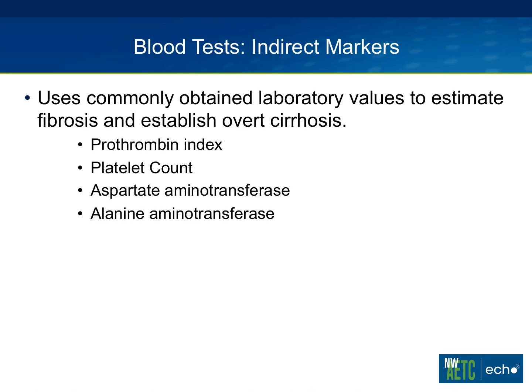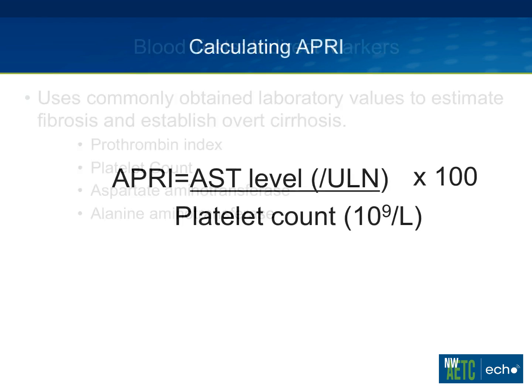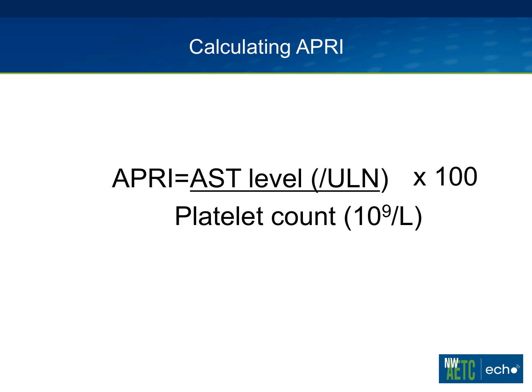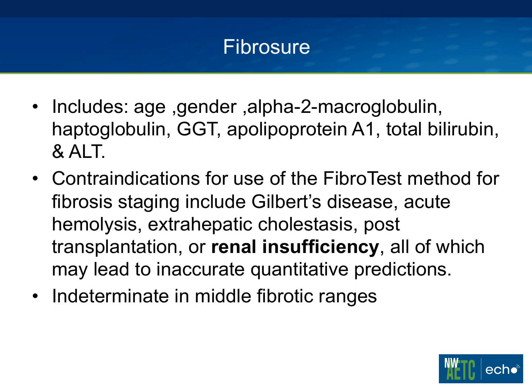Blood tests used for fibrosis assessment are grouped into direct and indirect markers. Indirect markers include a prothrombin index, platelet count, and AST and ALT. One of the most commonly used is the APRI score — the AST to platelet ratio index. It's great because you can calculate it right in the back office: take the AST level divided by the upper limit of normal for your lab, then divide by the platelet count, multiply by 100, and you get a ratio between zero and over two.